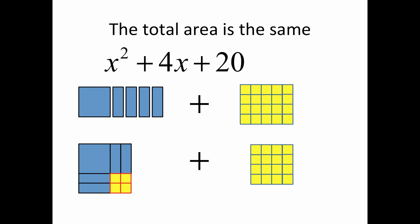What we have is something that has the same area as before - x² + 4x + 20 - but the pieces have been rearranged so that we have a square on the left and some pieces left over.